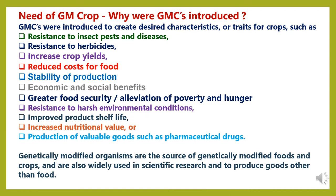Here we study the necessity of genetically modified crops. Why were genetically modified crops introduced? GM crops were introduced to create desired characteristics or traits that are beneficial, like developing resistance to insect pests and diseases, creating resistance to herbicides, increasing crop yields, reducing cost for food production, stability in production of agriculture crops, economic and social benefits, greater food security and alleviation of poverty and hunger, resistance to harsh environmental conditions, improved product shelf life, increased nutritional value, and production of valuable goods such as pharmaceutical drugs.